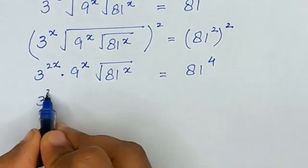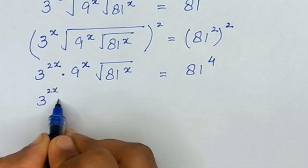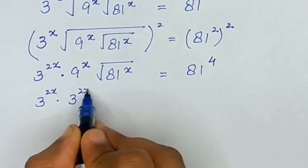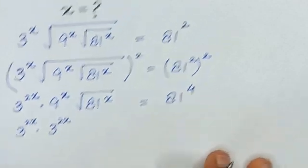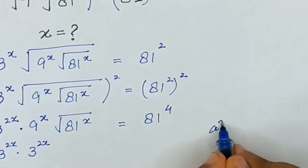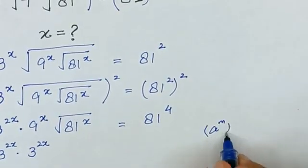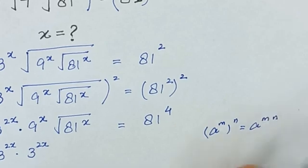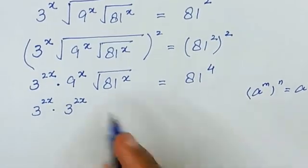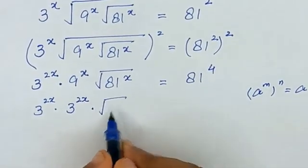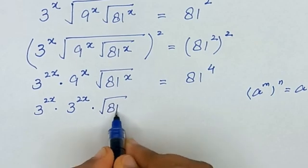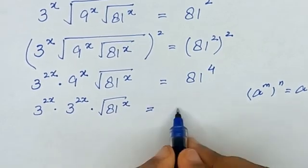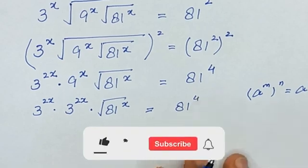Now it will be 3 raised to the power x. Since 9 is the same as 3 squared, it will again become 3 raised to the power 2x, because we know that a raised to the power m, whole power n, is equal to a raised to the power mn. The square root of 81 raised to the power x remains, and it will be 81 raised to the power 4.